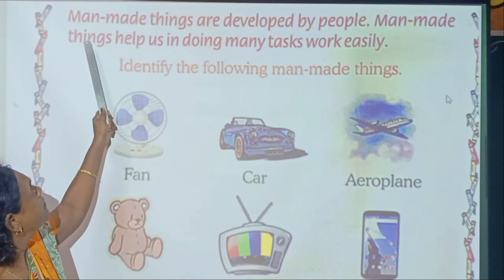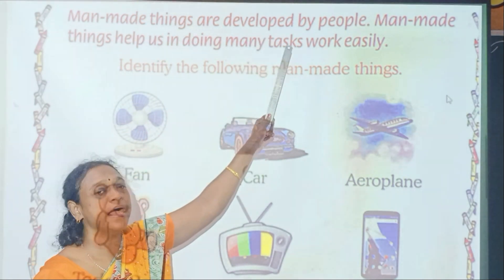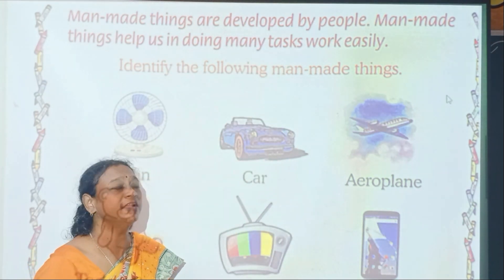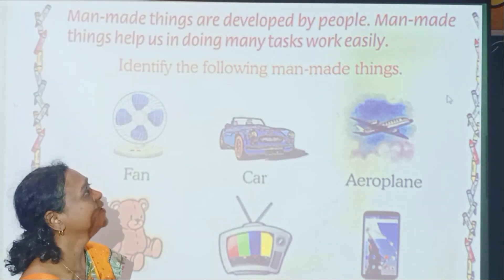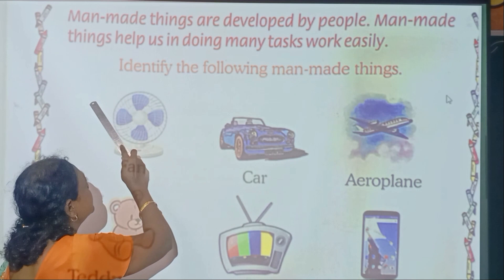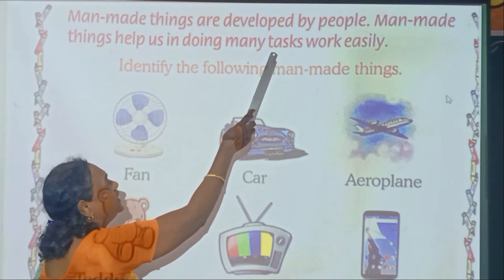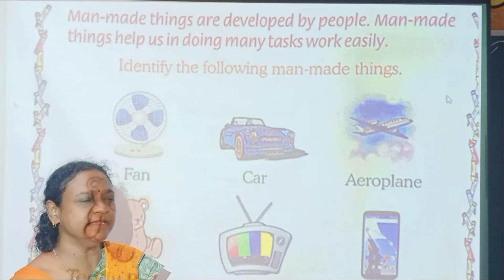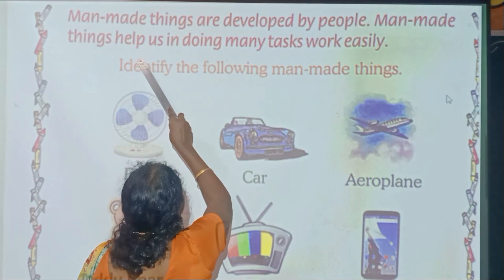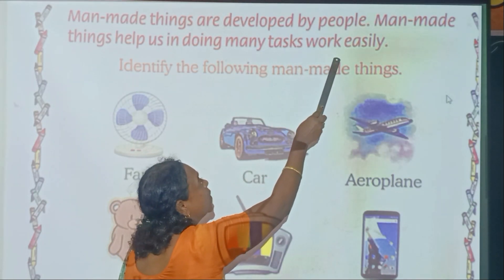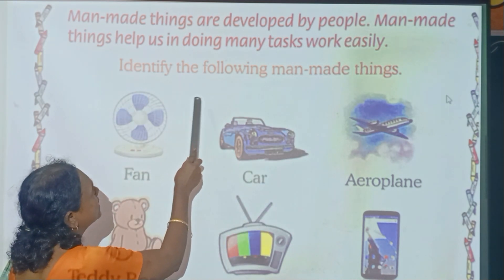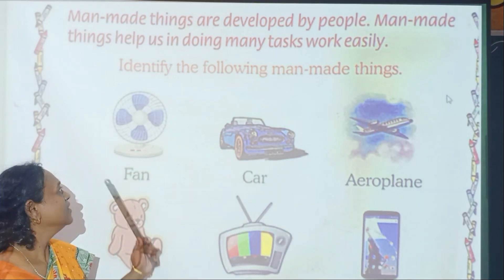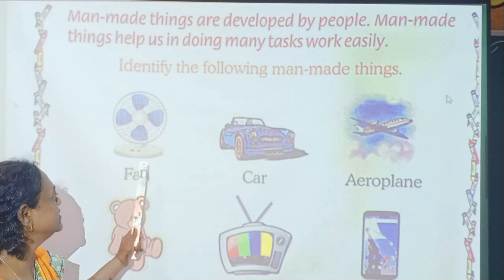Second page — we will read. Man-made things are developed by people. Man-made things help us in doing many tasks and help us work easily. Now we'll see how many man-made things are. You know what kind of things are man-made things.